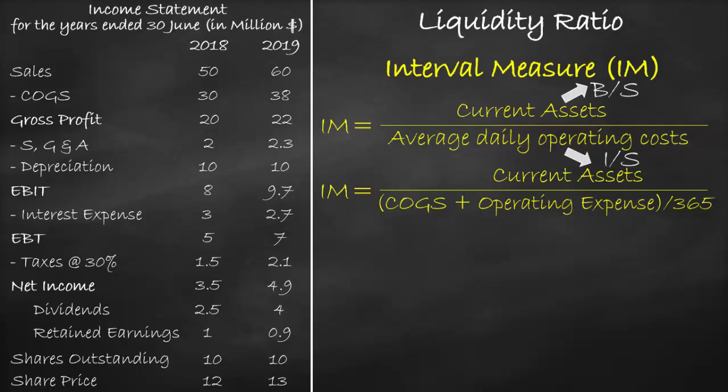Please note that the income statement is a flow account, which means it is calculated over a year, while the balance sheet is a stock account, which is calculated at a certain day. Since we cannot compare a year to a day, we need to convert by getting the average of the two balance sheet items, so we will use one income statement and two balance sheets.